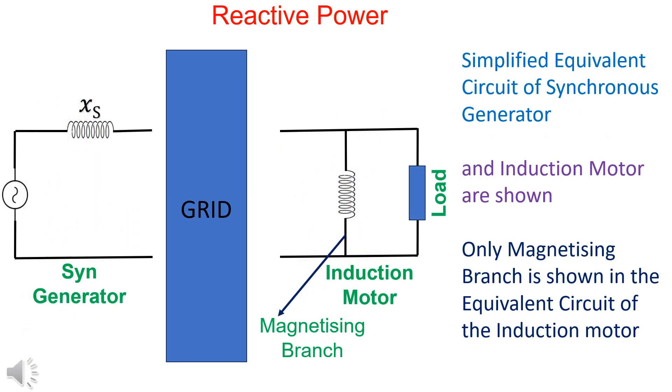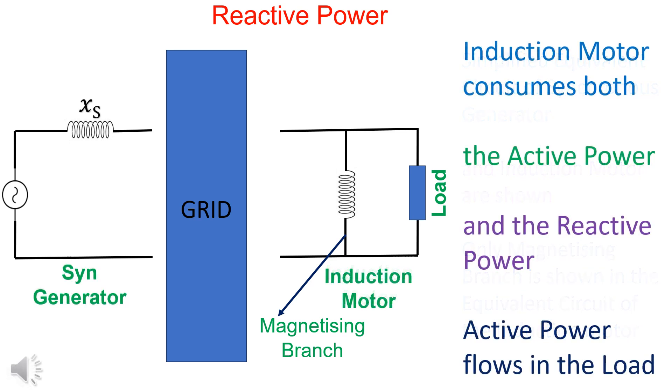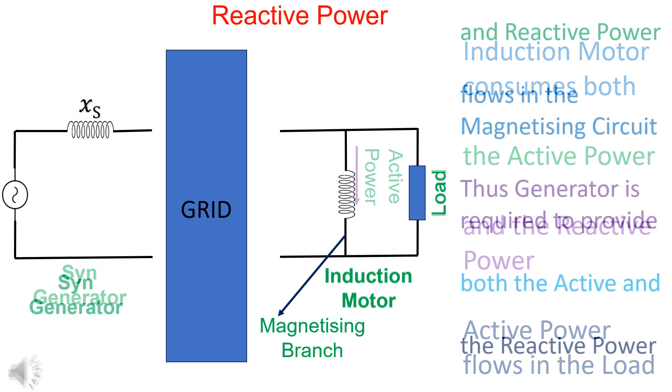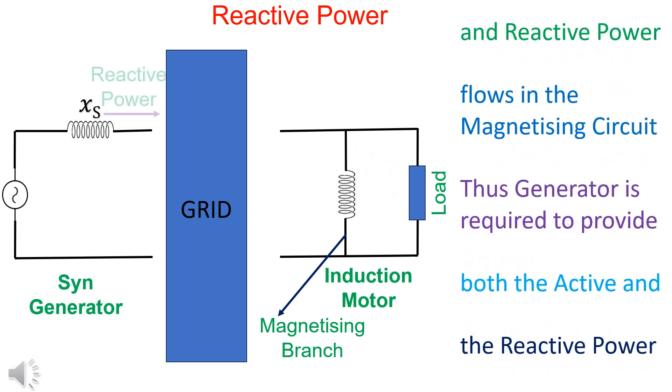Only the magnetizing branch is shown in the equivalent circuit of the induction motor. The induction motor consumes both the active and the reactive power. Active power flows in the load, whereas the reactive power flows in the magnetizing circuit.